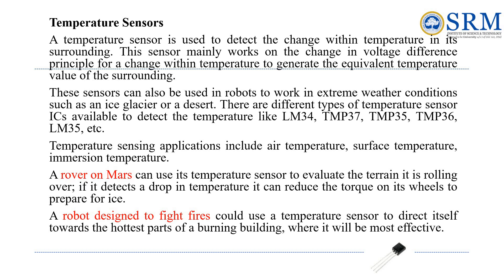Temperature sensors measure temperature changes by monitoring voltage differences, allowing robots to function in extreme conditions like icy glaciers or scorching deserts. Types include LM34, TMP37, and LM35. For example, a Mars rover uses its temperature sensor to adapt to changing terrain — if it senses a temperature drop it adjusts wheel traction for icy surfaces — while a firefighting robot can use a temperature sensor to find the hottest parts of a burning building.